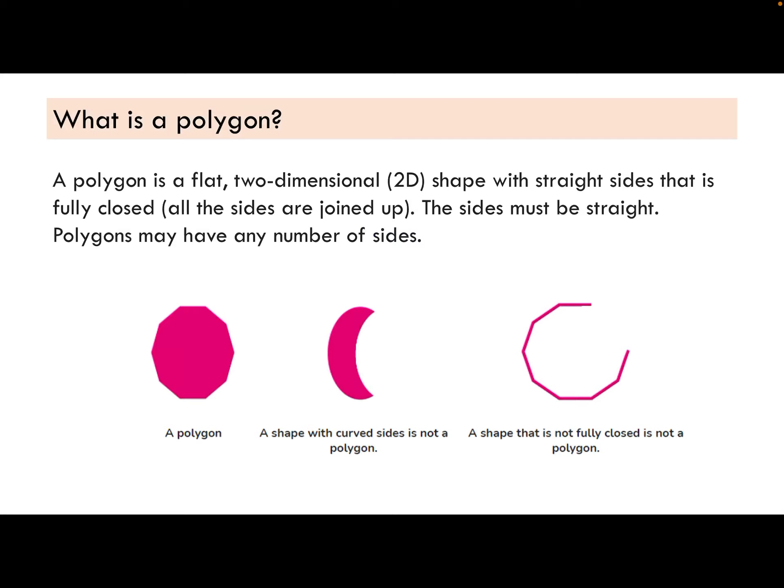as in all sides are joined. The sides must be straight polygons and they may have any number of sides. So here we have a polygon. It's a closed shape with straight sides. This is not a polygon. It is a closed shape,